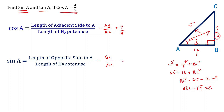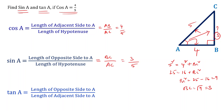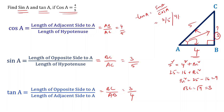So sin A equals BC by AC, which is 3 by 5. For tan A, the definition is the length of the opposite side to angle A divided by the length of the adjacent side to angle A. The opposite side is BC and the adjacent side is AB, so tan A equals 3 divided by 4. We can also verify this as sin A divided by cos A: 3/5 divided by 4/5, which equals 3/5 times 5/4, giving 3 by 4.